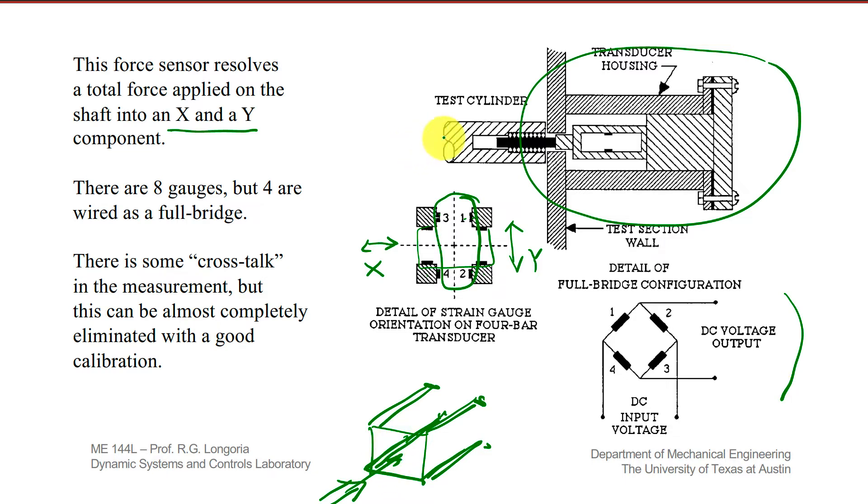So as you apply, this was holding a cylinder here, and as forces were put out of the plane of the page as well as up and down, you can measure simultaneously the XY forces. So again, there's two bridges there that are active, so you have two channels of force.